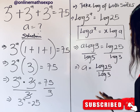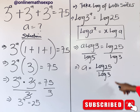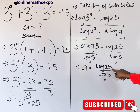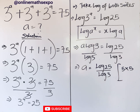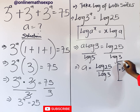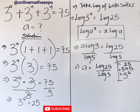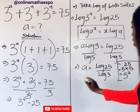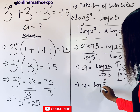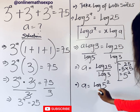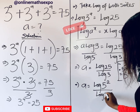Now remember that 25 can also be simplified. So 25 is the same thing as 5 times 5, which is also the same as 5 to the power of 2. So we can simplify this to have a is equal to log(5²) divided by log(3).